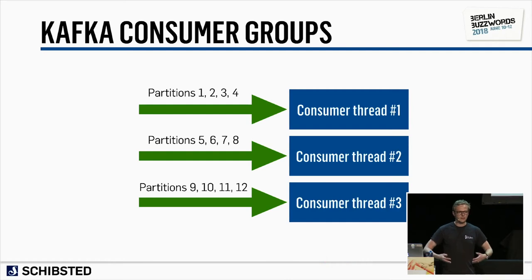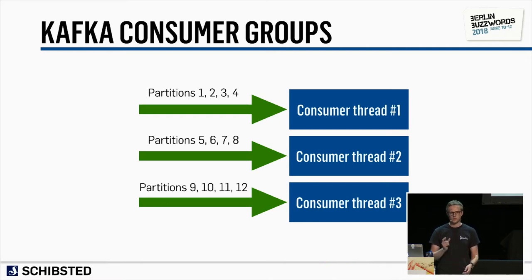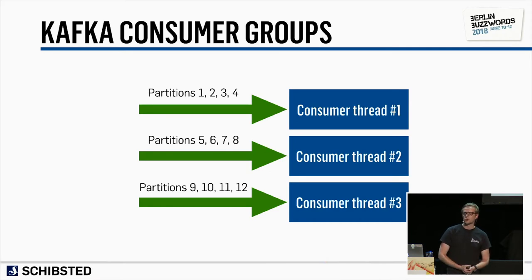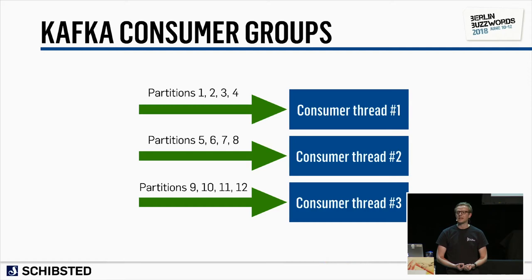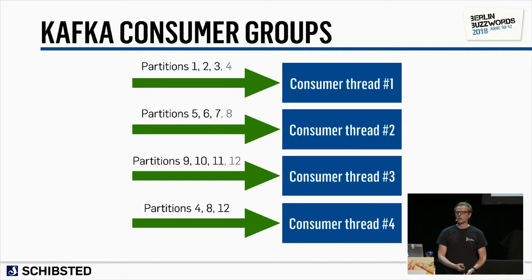The topic and its distributed partitions are the core brilliance of Kafka, but there's another equally important concept: the Kafka consumer group. If a consumer has three threads consuming from 12 partitions, they even out to four partitions each. But when event volume increases — like during breaking news — you can start another consumer thread on an entirely different machine or container. Kafka will redistribute the load behind the scenes, allowing you to scale your application as long as you have enough partitions.